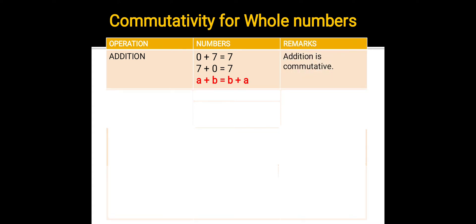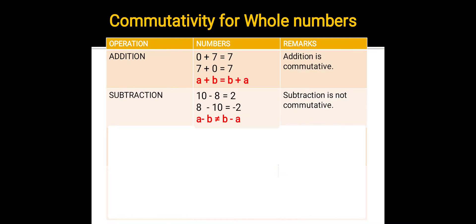Let's check for subtraction. 10 minus 8 equals 2. Let's change the order of these two whole numbers. 8 minus 10 equals negative 2. So when the order of the numbers changes, the answer also changes. Hence, subtraction is not commutative. a minus b will not be equal to b minus a.